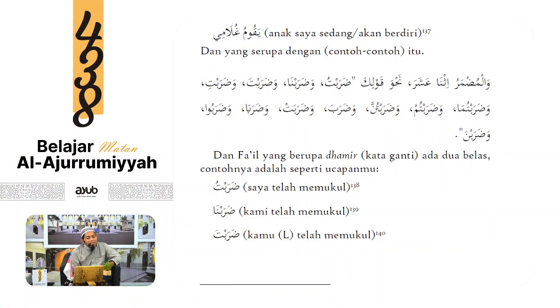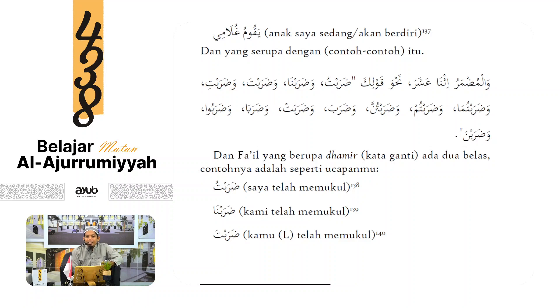Wal-mudmaru itnaa 'asyara - fa'il yang berupa domir ada dua belas bentuknya. Kalau ada di lafaz bilang itu fa'ilnya, kalau tidak ada bilang disembunyikan. Dhorobtu fa'ilnya tu, dhorobna fa'ilnya na, dhorobta fa'ilnya ta, dhorobti fa'ilnya ti, dhorobtuma, dhorobtum, dhorobtunna, dhoroba - fa'ilnya domir mustatir takdirnya hua.